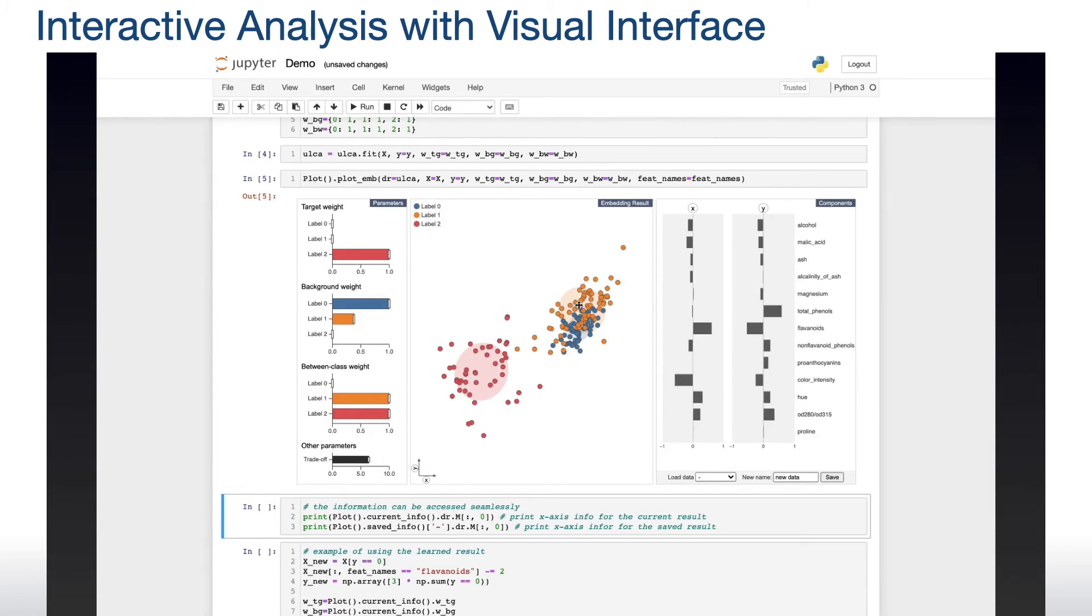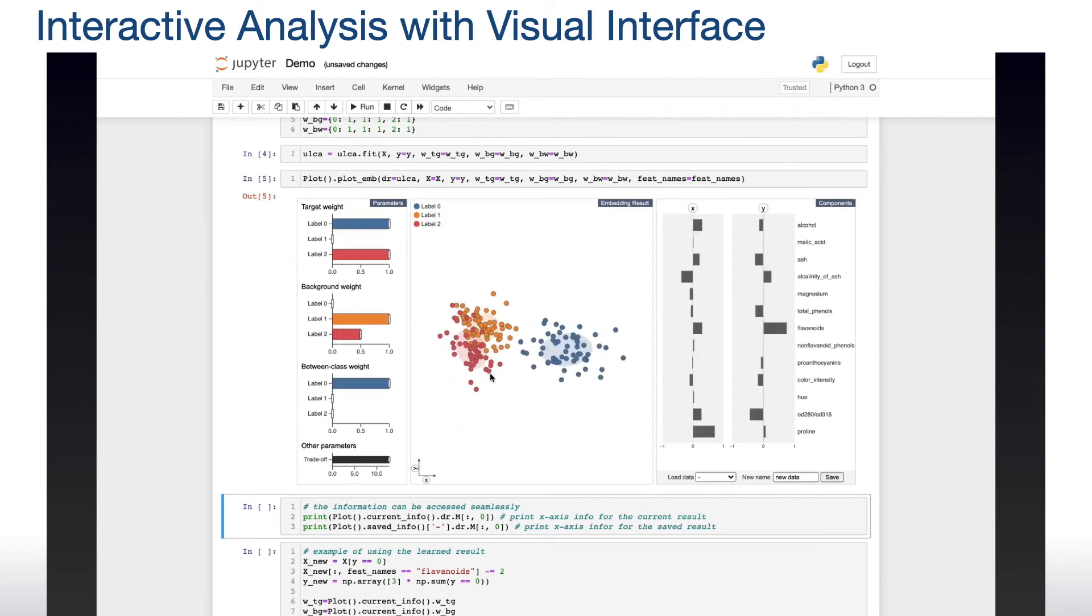We can also refine the result by demonstrating how we want to change the embedding result. For example, to know which factors are similar to the orange and red groups, we move the orange group closer to the red group. Our algorithm automatically finds the best parameters to resemble the change and updates the embedding.